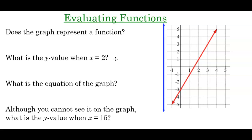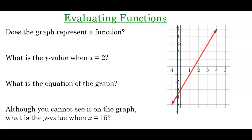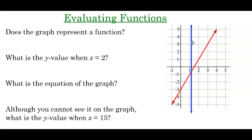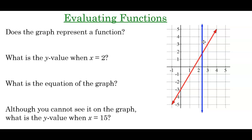So I'll use my vertical line. We'll check there — there's only one point of intersection. And there — there's only one point of intersection. There, there's only one point of intersection. There, there's only one point of intersection.